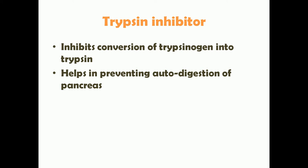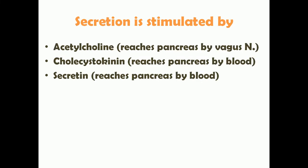If there is a deficiency of trypsin inhibitor, trypsinogen can get activated into trypsin within the pancreas itself, which can lead to pancreatitis. So trypsin inhibitor is really important to prevent acute pancreatitis. Pancreatic secretion is stimulated by three factors: acetylcholine, cholecystokinin, and secretin. Acetylcholine is produced from the vagus nerve, while cholecystokinin and secretin are produced from mucosal cells in the duodenum and upper jejunum — reaching the pancreas via the bloodstream.